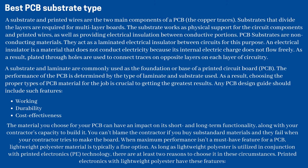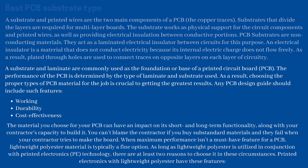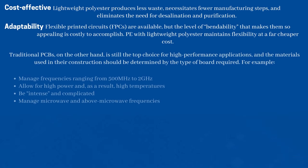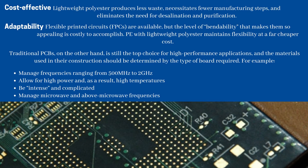You can't blame the contractor if you buy substandard materials and they fail when the board is being made. When maximum performance isn't a must-have feature for a PCB, lightweight polyester material is typically a fine option. As long as lightweight polyester is utilized in conjunction with printed electronics (PE) technology, there are at least two reasons to choose it: it is cost-effective — producing less waste, requiring fewer manufacturing steps, and eliminating the need for desalination and purification — and it provides adaptability. Flexible printed circuits (FPCs) are available, but the level of bendability that makes them so appealing is costly to accomplish. PE with lightweight polyester maintains flexibility at a far cheaper cost.